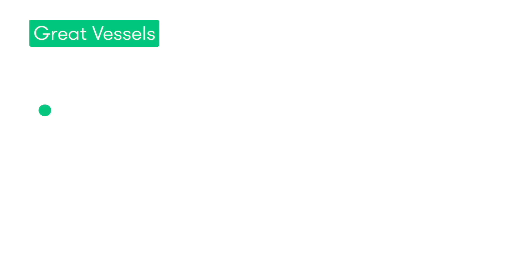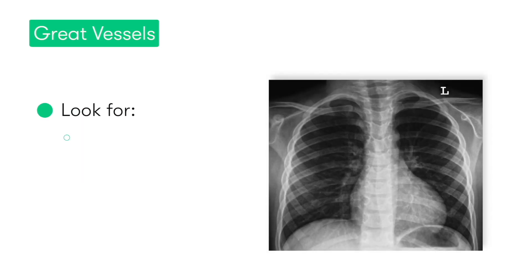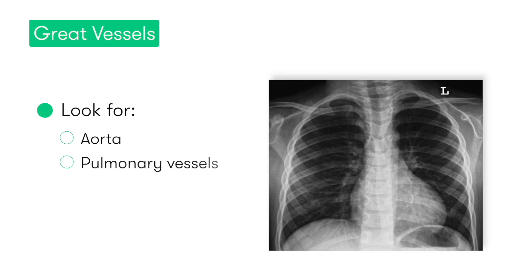Moving on to G, we're going to look at the great vessels. This involves reviewing the aorta — first identifying the knuckle of the aorta and the descending thoracic aorta, which lies inferior to it — which in cases of aortic dissection may allow you to see a widened aorta on the chest x-ray. We should also look to identify the pulmonary vessels, the superior vena cava, and the azygous vein.